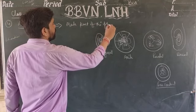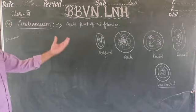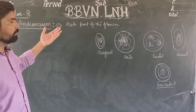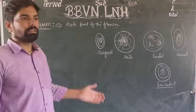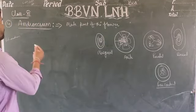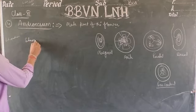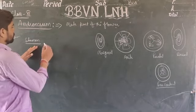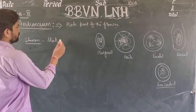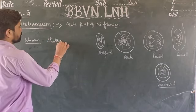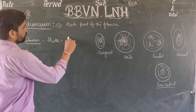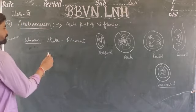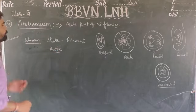The male part of the flower is the androecium, which consists of two or more stamens. The stamens have two parts: the stock-like structure is known as the filament, and the second part is the anther.